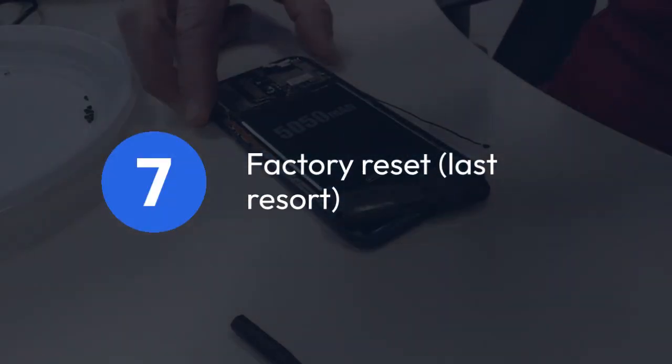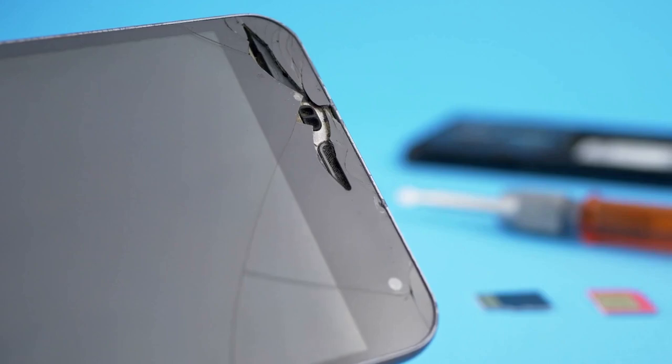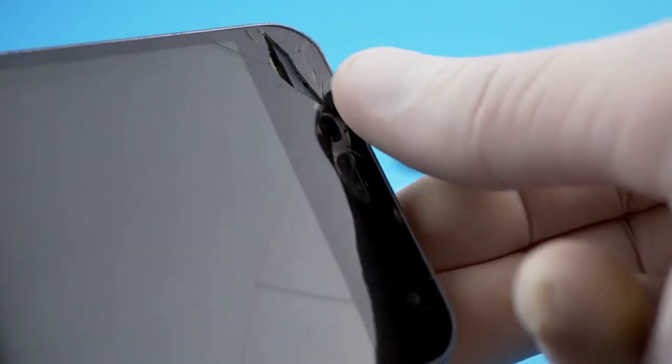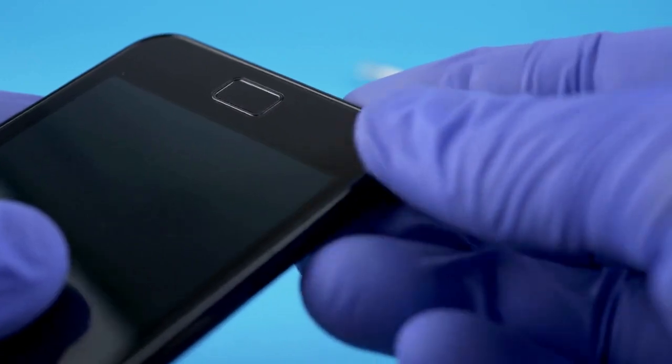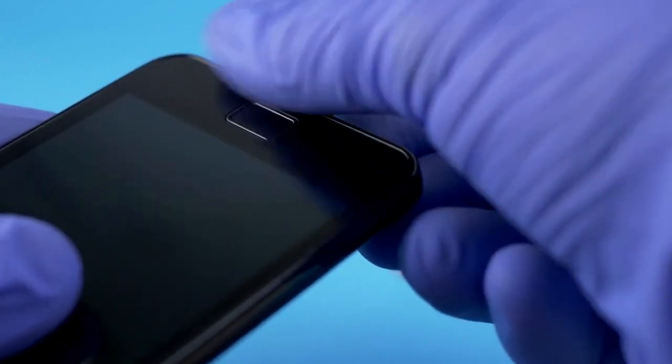7. Factory reset. Last resort. If all else fails, a factory reset can clear software glitches. Remember to backup your important data before doing this. This will erase all your data and reset your phone to its original settings.